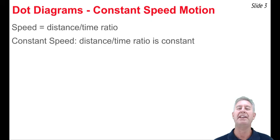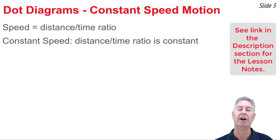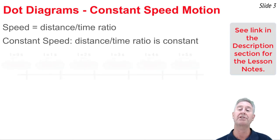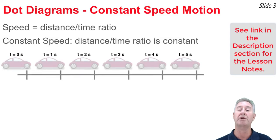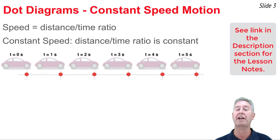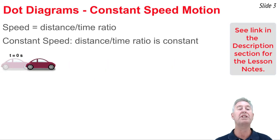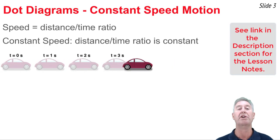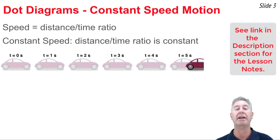A dot diagram shows the position of the car at one-second intervals of time, representing the car's position with a dot. If we have a car that's traveling with a constant speed, we would expect it to travel the same distance every one second of time. Here we see such a car traveling to the right, with the position of the car shown at one-second intervals.